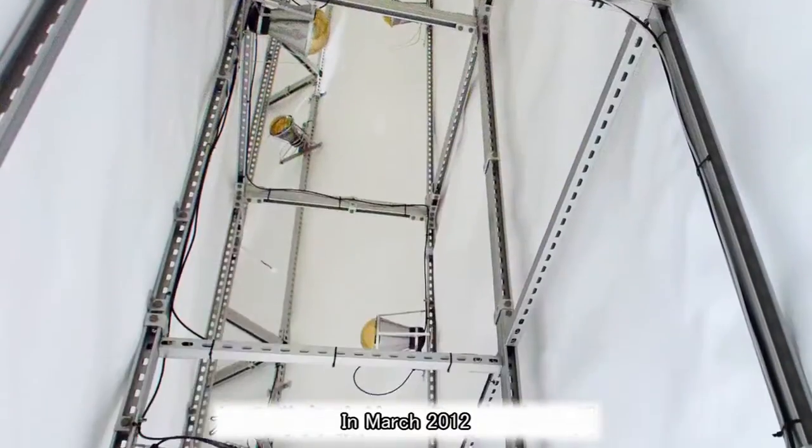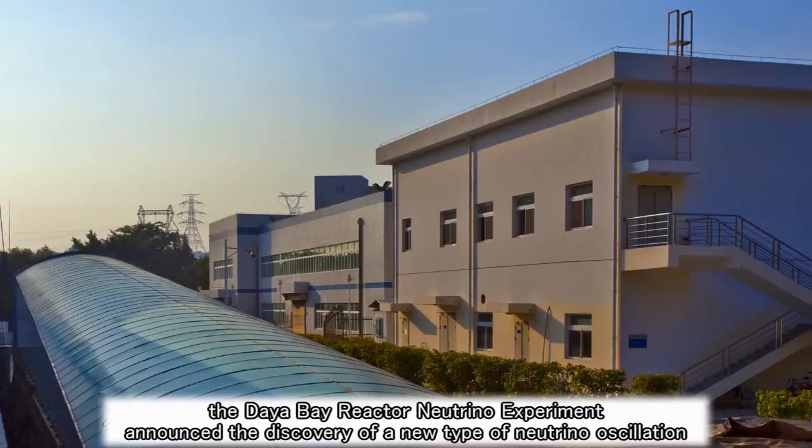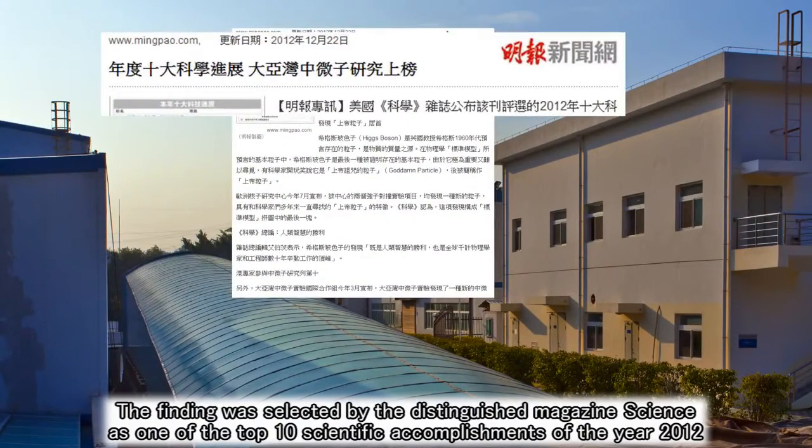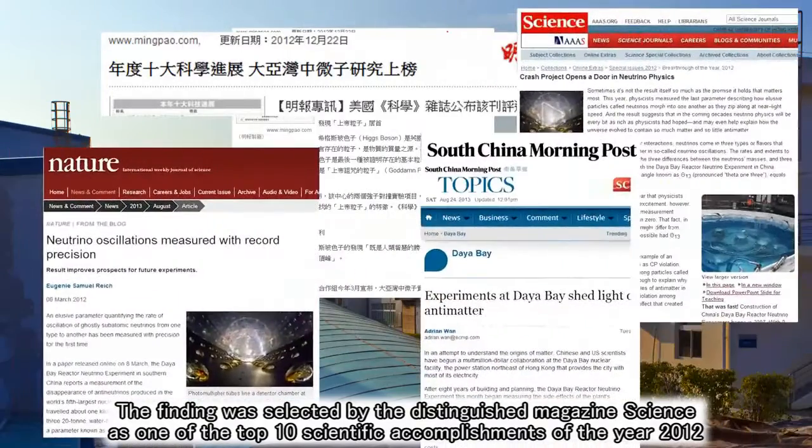In March 2012, the Daya Bay reactor neutrino experiment announced the discovery of a new type of neutrino oscillation. The finding was selected by the distinguished magazine Science as one of the top 10 scientific accomplishments of the year 2012.